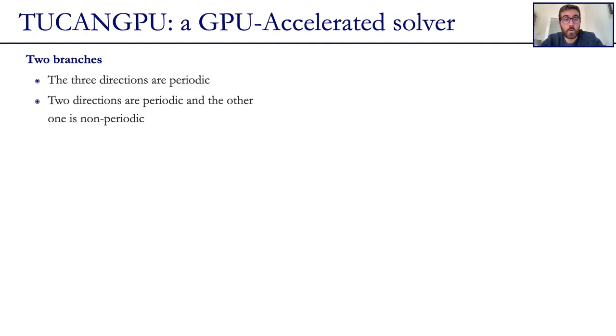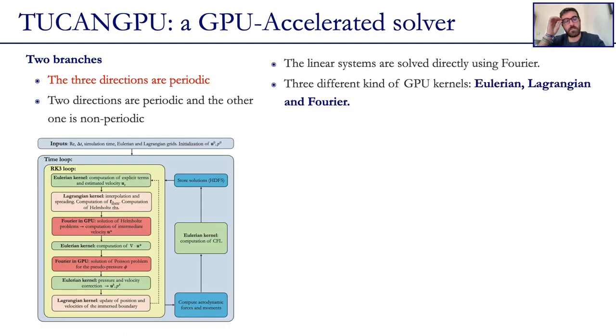Today we're going to focus on Tukan GPU, which we have developed to have two branches. First of them is the one in which the three directions are periodic. Basically in here, the linear systems are solved directly using Fourier, which are the Helmholtz problems for each intermediate velocity component and the Poisson problem for the pseudo-pressure. And then we have developed three different kinds of GPU kernels, which are Eulerian, Lagrangian, Fourier, depending of course on the quantities we are computing.